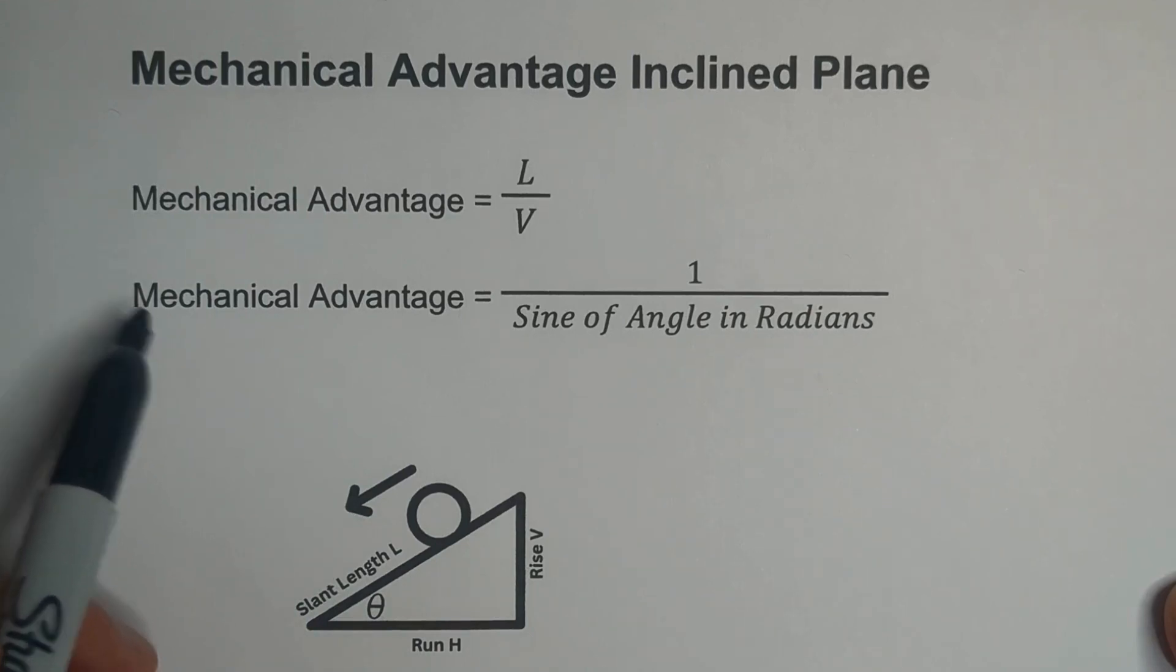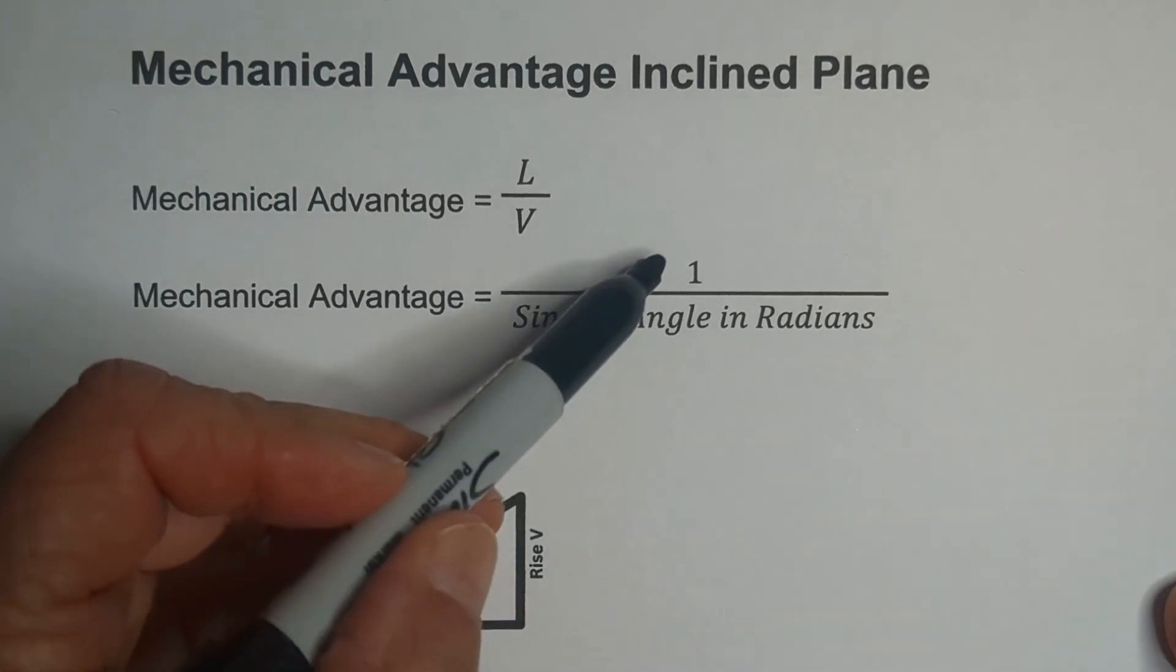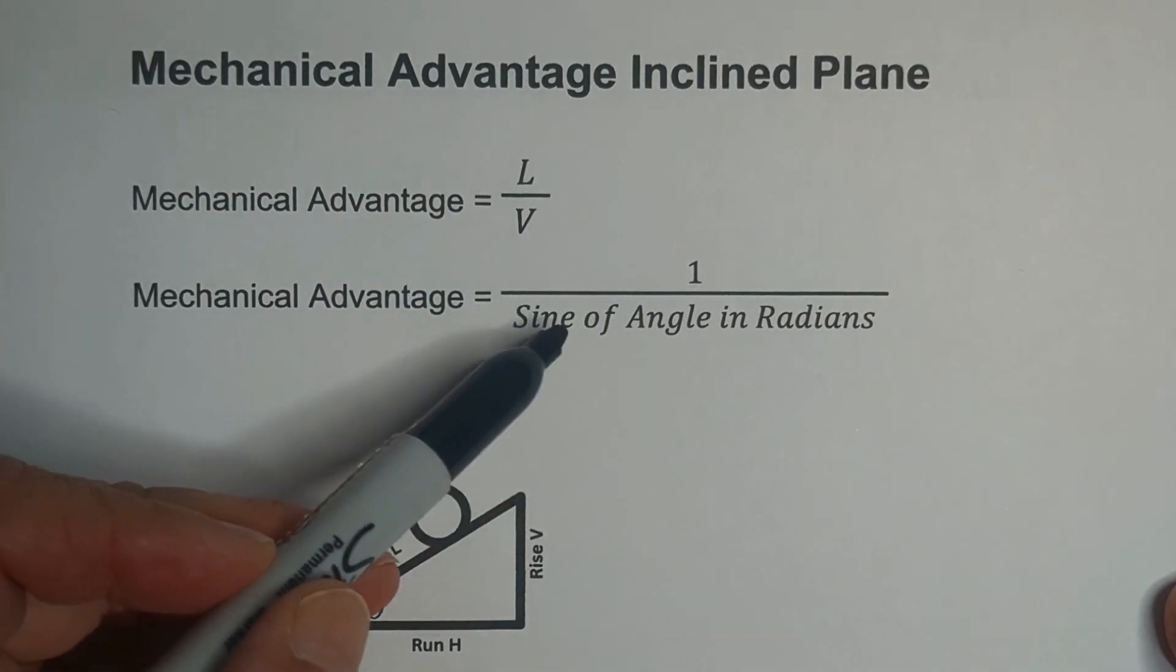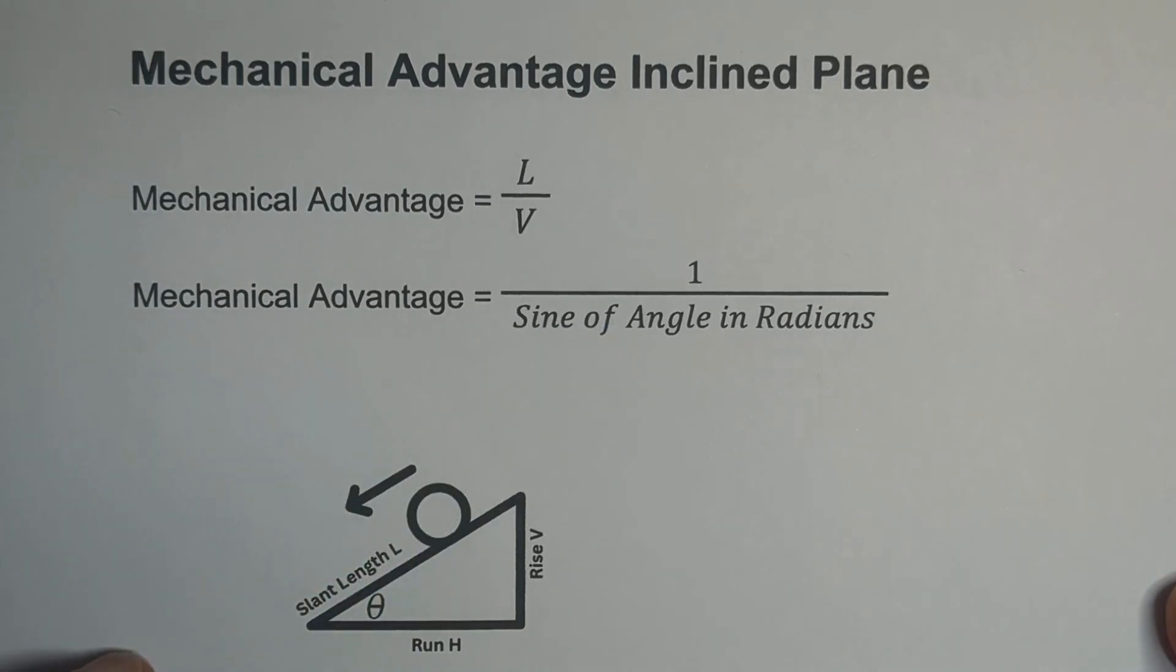Or a second way you can use is the angle I'm talking about, this angle right here, it's called the inclined angle. And you take one over the sine of the angle in radians.